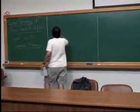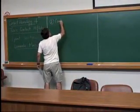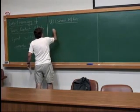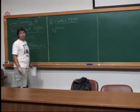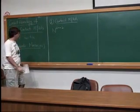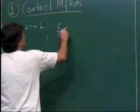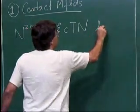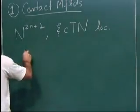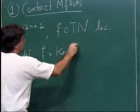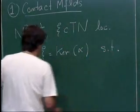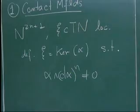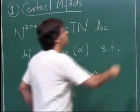Let me start by recalling some facts about contact manifolds. In this talk, N will always be a (2n+1)-dimensional manifold, orientable and connected. A contact structure is a maximally non-integrable hyperplane field, which is locally equivalent to being defined as the kernel of some one-form alpha, where alpha satisfies the non-degeneracy condition at every point.